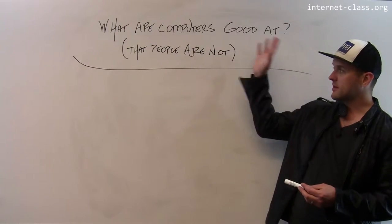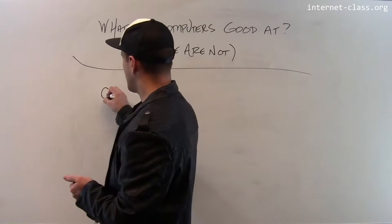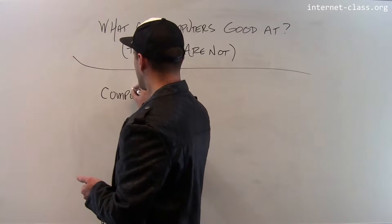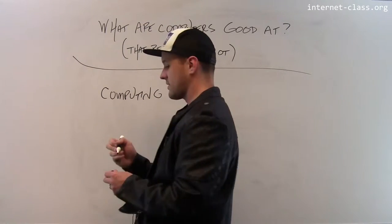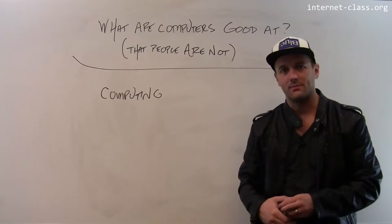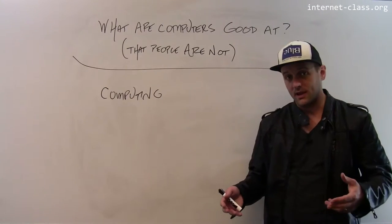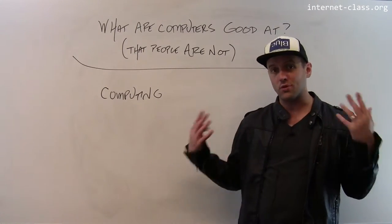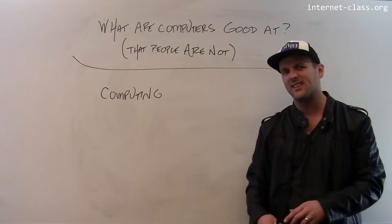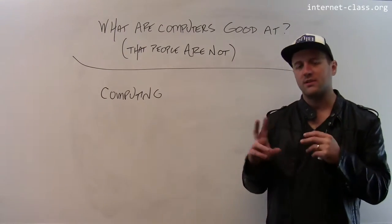So what are computers good at that people are not? Well, computers are good, as the name might suggest, at computing things. Computers can rapidly and accurately perform billions of simple mathematical operations, and those operations can result in emergent behavior where they have displays and can understand, quote unquote, human speech and things like this.